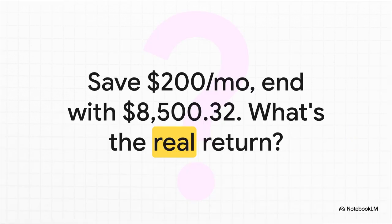So here's the puzzle for today. Imagine you've been saving $200 a month for three years, and you end up with a little over $8,500. Sounds pretty good, right? But here's the catch. There's a 10% bonus baked right into that number. So the real question is, how well did your money actually perform all by itself?